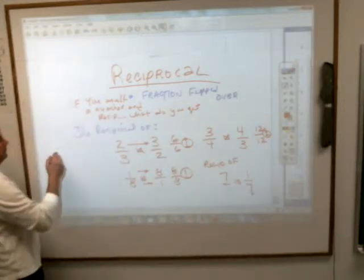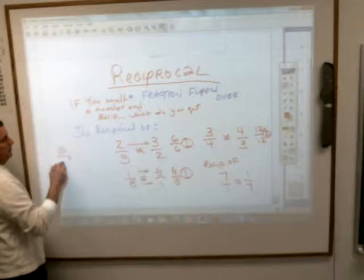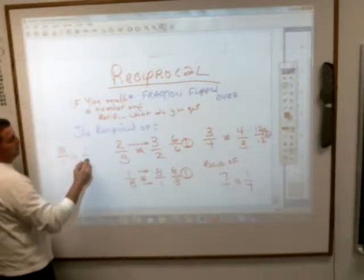Any whole number you make a fraction by putting it over one, 15 over one, its reciprocal is one over 15.